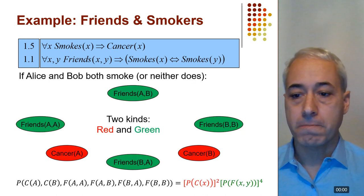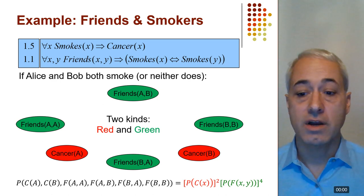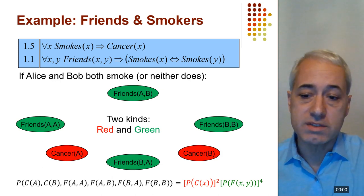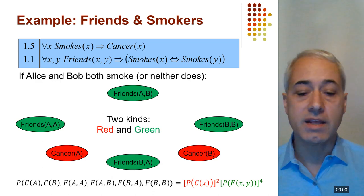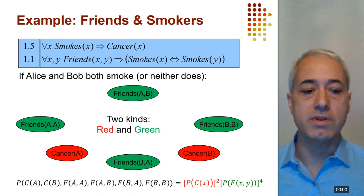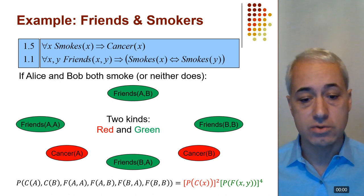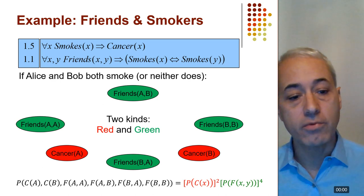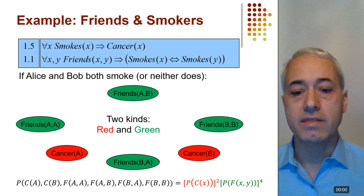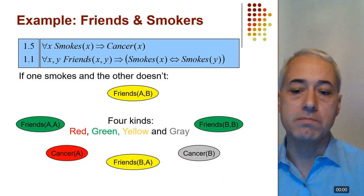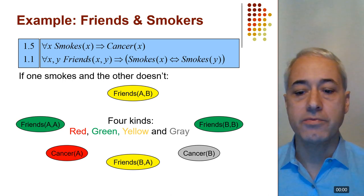Going back to the friends and smokers example: if we condition on smokes(Anna) and smokes(Bob), those variables disappear and the edges connecting them to other variables also disappear, leaving a bunch of independent Boolean variables. If Alice and Bob both smoke or neither does, we have only two kinds of variables — friends above and friends below — and all same-kind variables have the same distribution. Computing the probability just requires raising the probability of cancer to the power 2 and the probability of friends(X,Y) to the power 4.